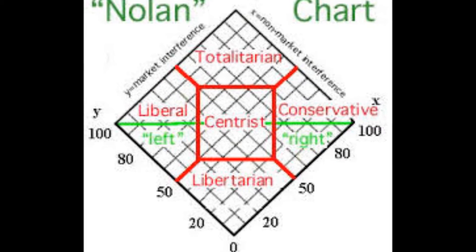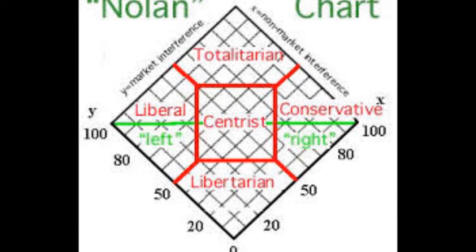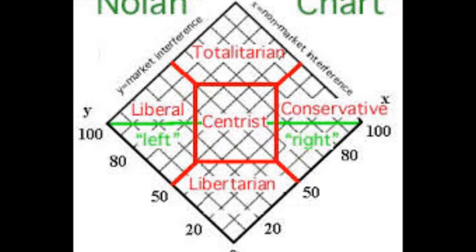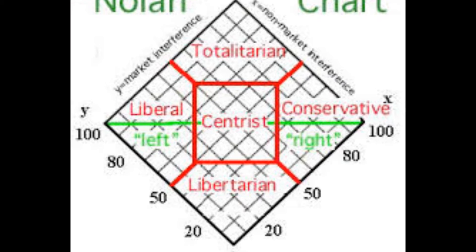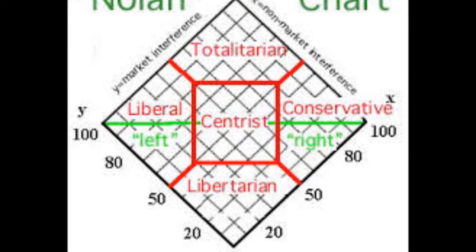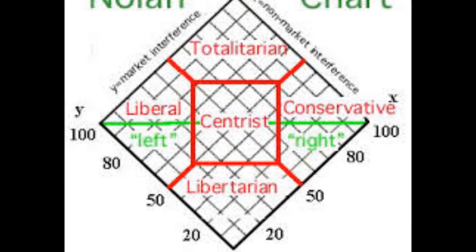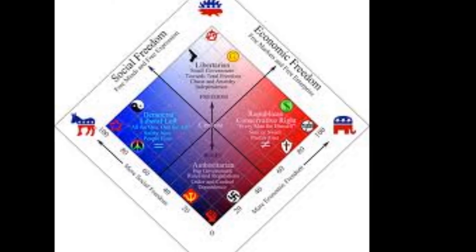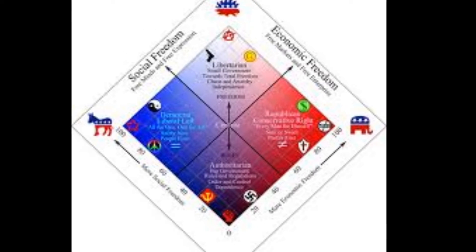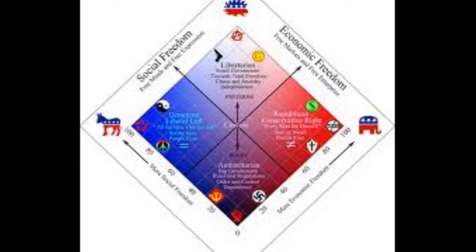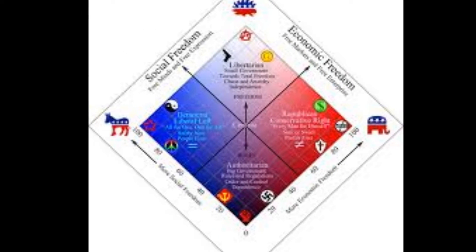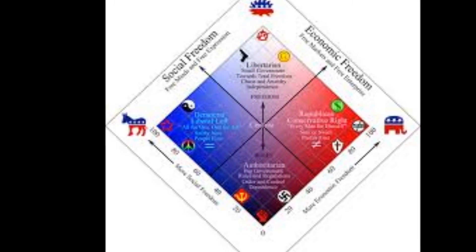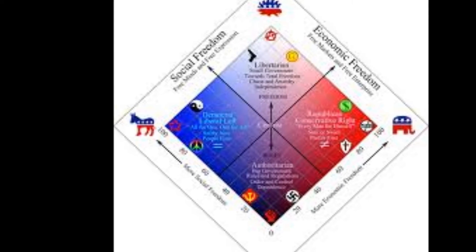This is the Nolan chart. It is a political spectrum diagram created by David Nolan in 1969. The chart divides human political views into two vectors: economic opinion and personal opinion.